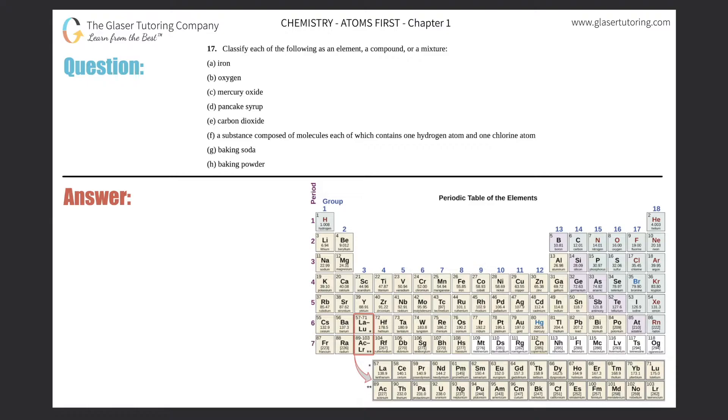Number 17: classify each of the following as an element, a compound, or a mixture. We kind of did the same question in number 16, so if you need an in-depth version of what elements, compounds, and mixtures are, go see that question.